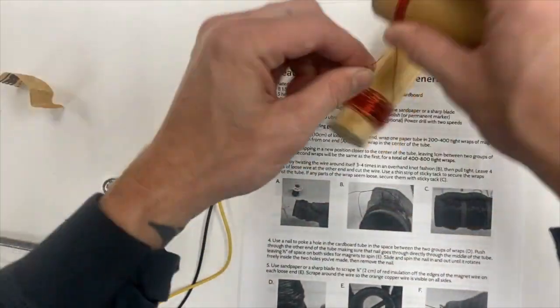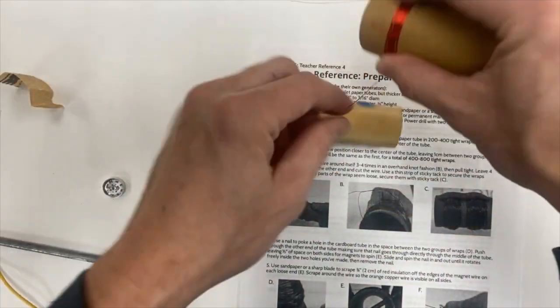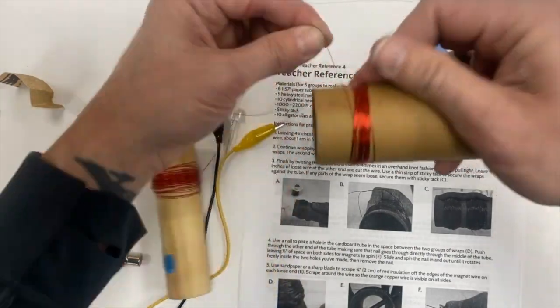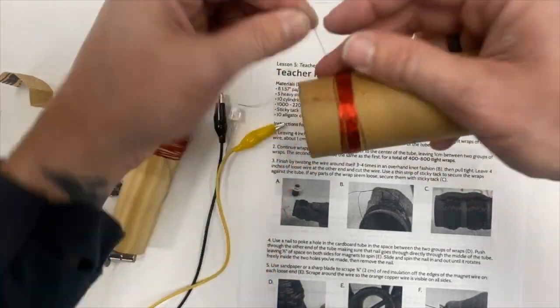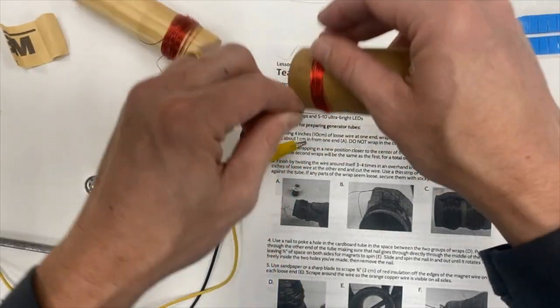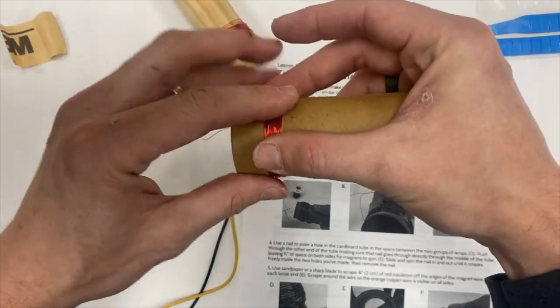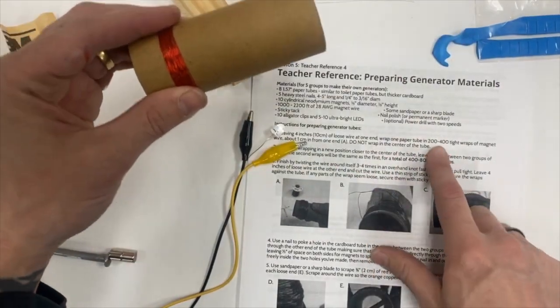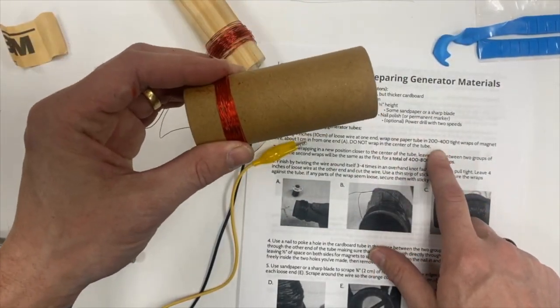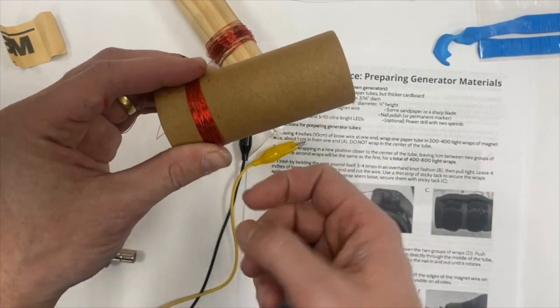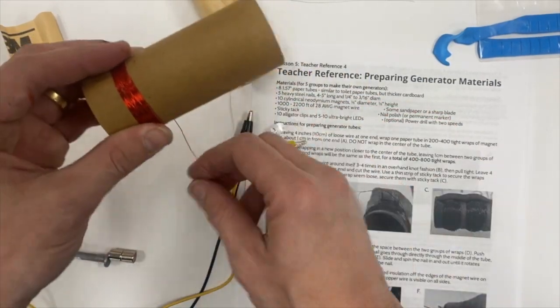So depending on how much wire I have, I will wrap more or fewer wraps in my first set, and then I'm going to cross over. This would usually be between 200 and 400 wraps just on one side. I've only done like 15 or so. So you're going to end up with a lot more wraps.